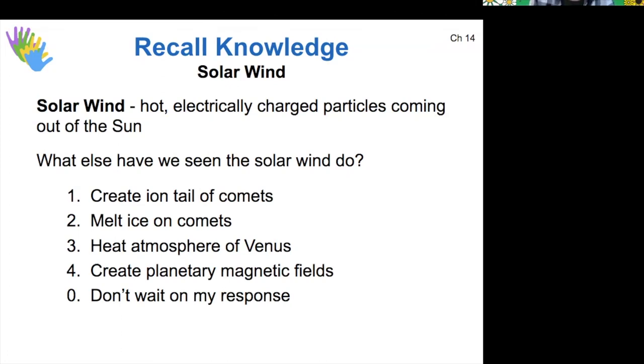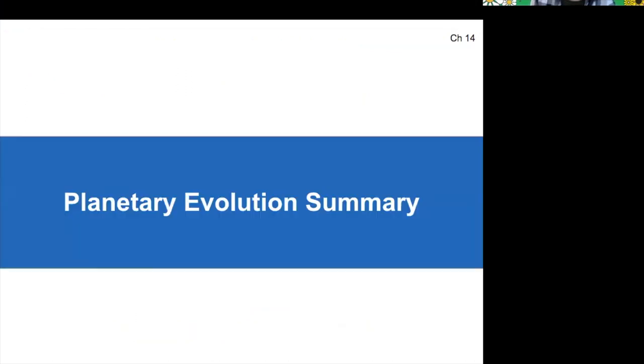Last time we saw that the solar wind was responsible for creating the ion tails of comets. It does not create planetary magnetic fields, but it does interact with them to create the auroras. So just a little bit of review there. So that's the entire solar system formation process. Now, after this, we move into what we would consider planetary evolution.